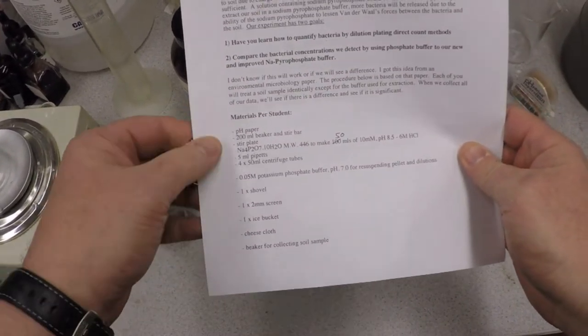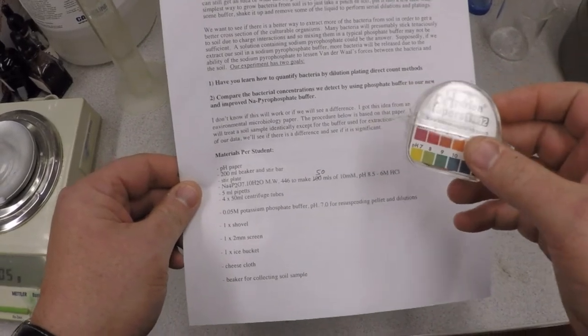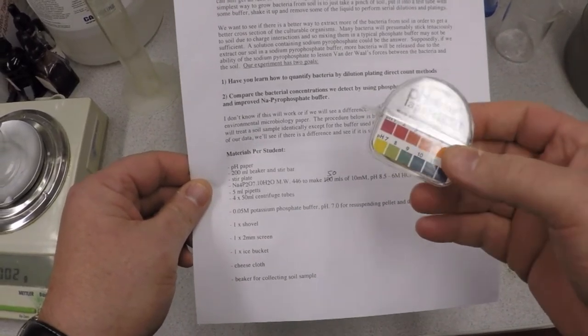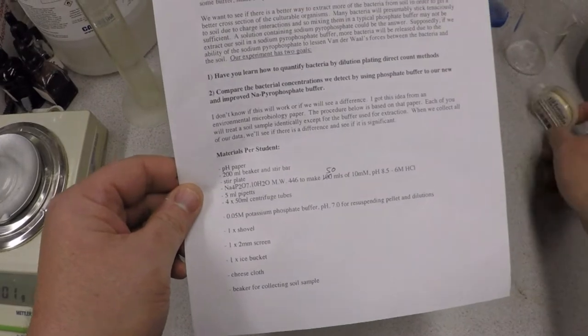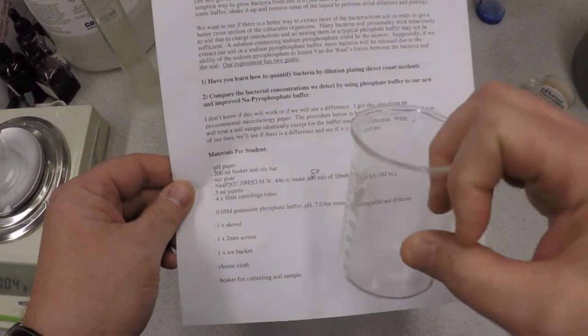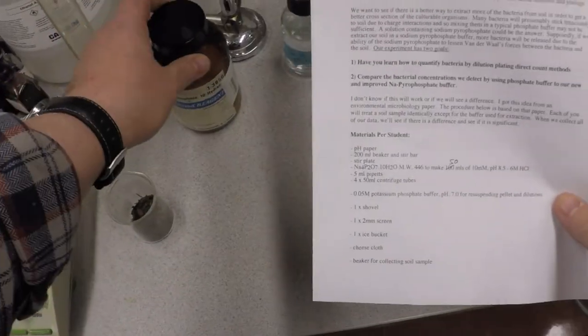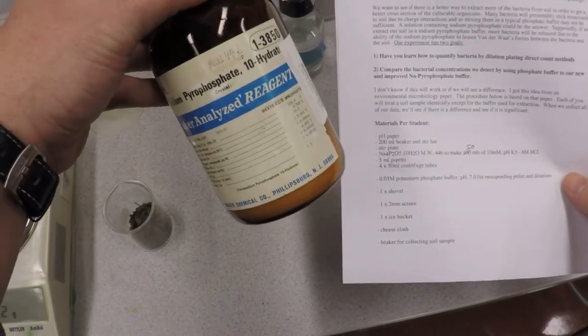If I look at this little procedure, you're going to have pH paper. This is going to be used to make your sodium pyrophosphate; it has to be a certain pH. You're going to have a beaker and a stir bar and a stir plate in order to make up your buffer.